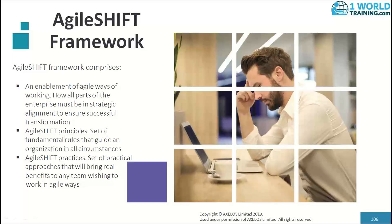There are three aspects of the AgileShift framework that are essential to understand at its core. The framework basically comprises an enablement of Agile ways of working, where all parts of the enterprise must be in strategic alignment to ensure a successful transformation, and every aspect of the organization is considered.